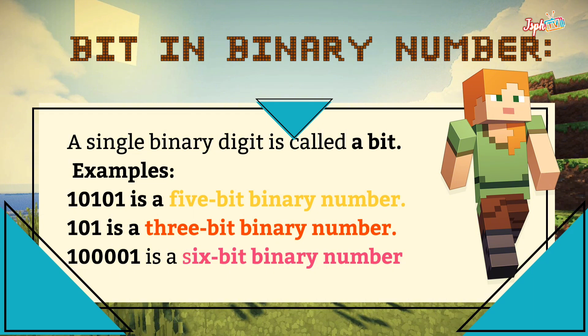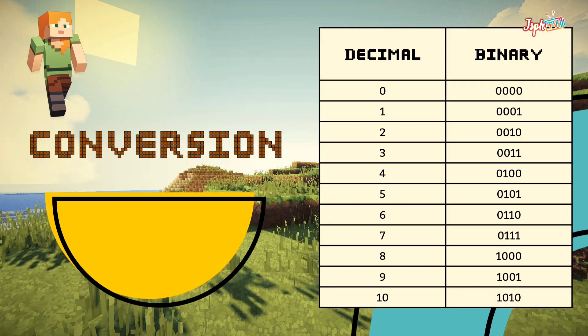A single binary digit is called a bit. For example, 1010 is a 4-bit binary number, 101 is a 3-bit binary number, and 100001 is a 6-bit binary number. This is the conversion chart for decimal to binary.